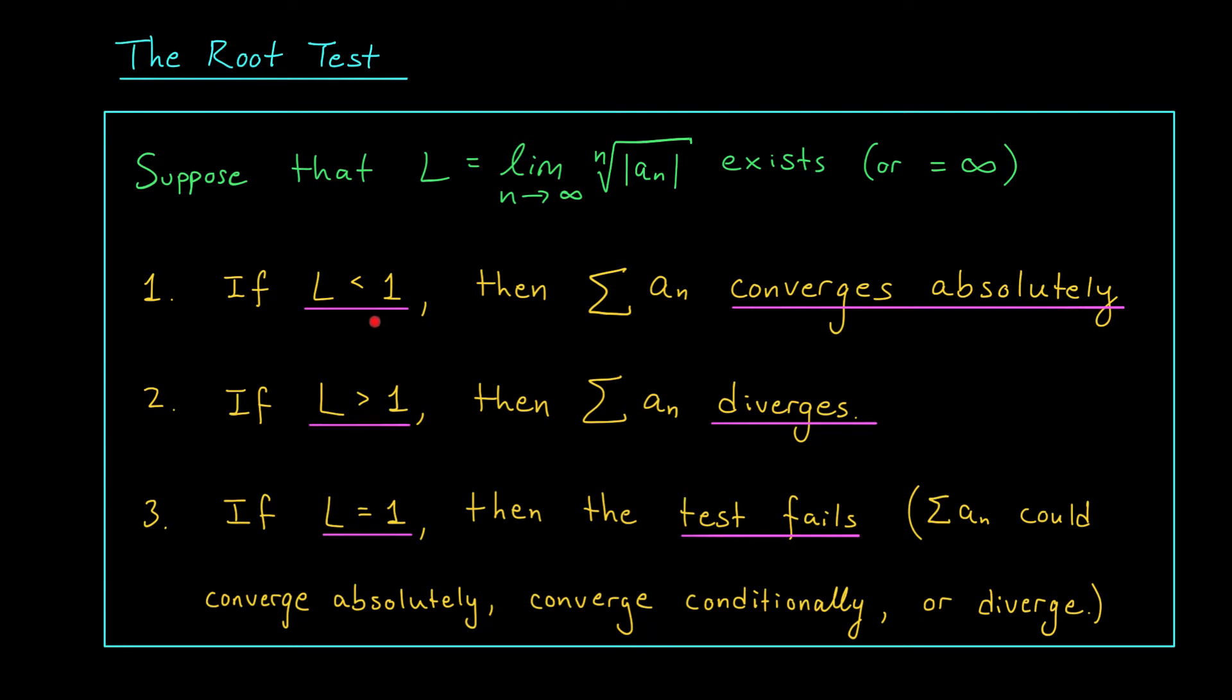Just like with the ratio test, if L < 1, our series will converge absolutely—it's behaving like a convergent geometric series. If L > 1, the series will diverge, because it's behaving like a divergent geometric series. Finally, if L = 1, the test fails. We can't draw any conclusions without applying further tests. The series could converge absolutely, converge conditionally, or diverge. Let's check out an example to see how this test can be used.